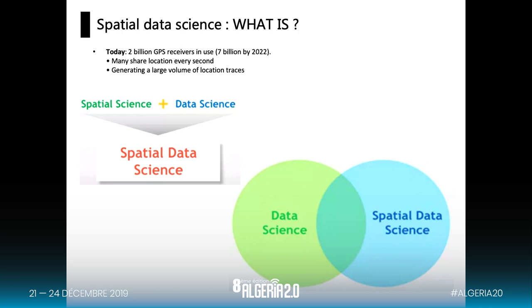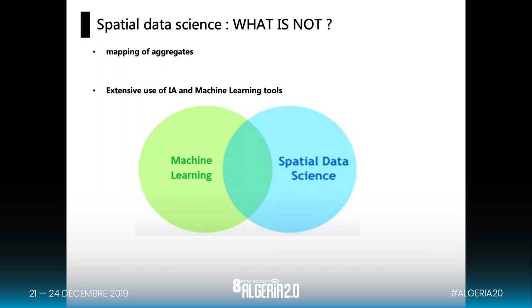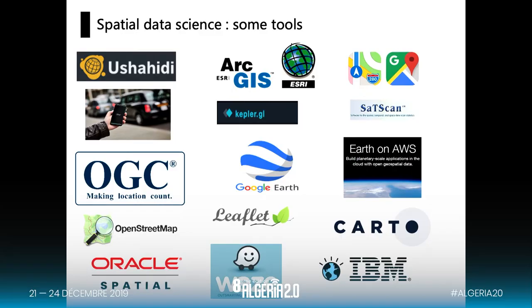There is a lot of use of GPS data now, with an estimation of 7 billion people using GPS data in 2022. The emergence of all this data can help us develop new models called spatial data science. We should know that spatial data science is not just the mapping of aggregate data and is not the extensive use of AI models. We can present some tools used to analyze spatial data like ArcGIS, Google Maps, Apple Maps and others.